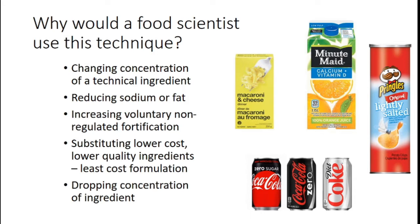Often this technique is used for least cost formulation. For example, if making macaroni and cheese you could buy top premium flour or discount flour for your noodles. The best bet may be to do a blend ratio — slowly reducing the amount of premium flour and replacing it with a discount flour so the noodle has the same functionality, the customer doesn't taste the difference, but you're reducing cost. This is called least cost formulation and food product developers are often involved in that.